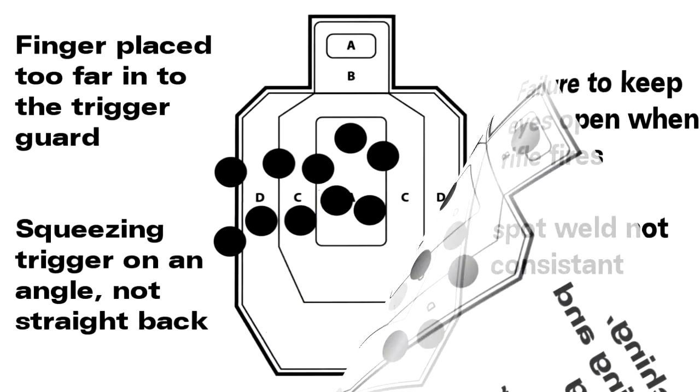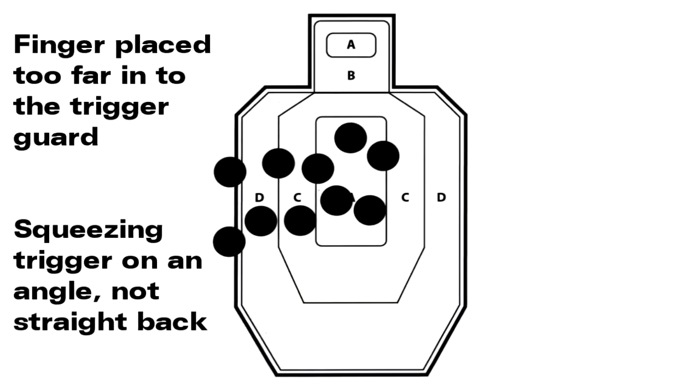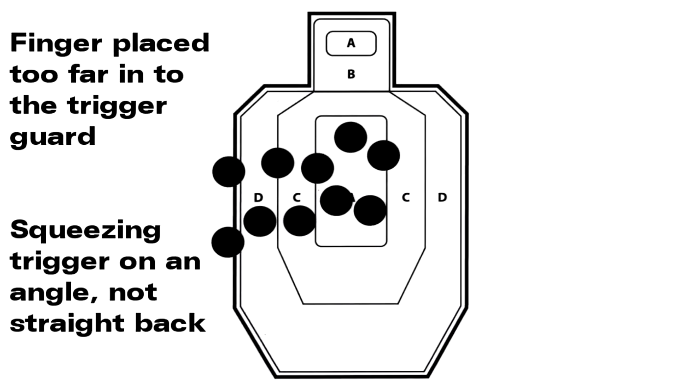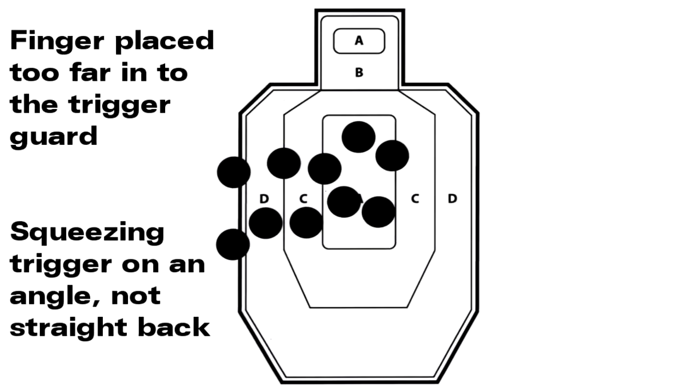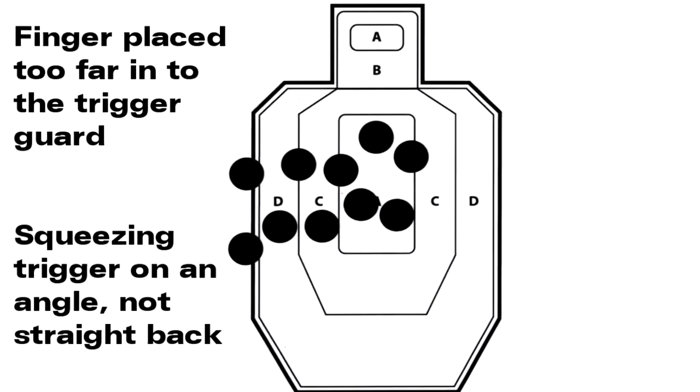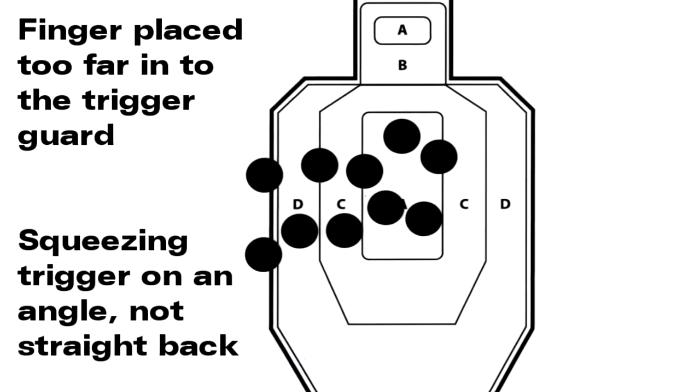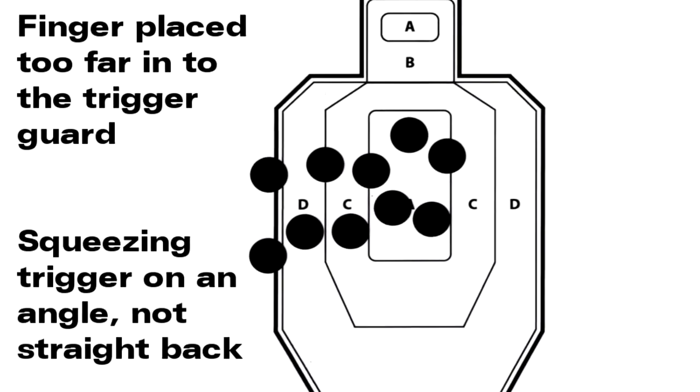Sample target number four. Probable causes: finger placed too far into the trigger guard. When the rifle fires, the finger moves back rapidly and drags against the right side of the stock, causing the rifle and front sight to move to the left. Number two: squeezing trigger on an angle and not straight back.